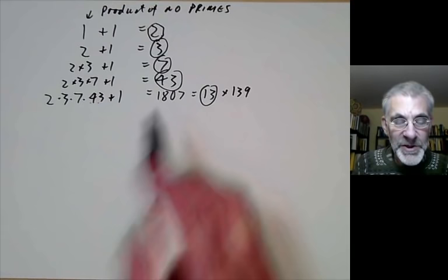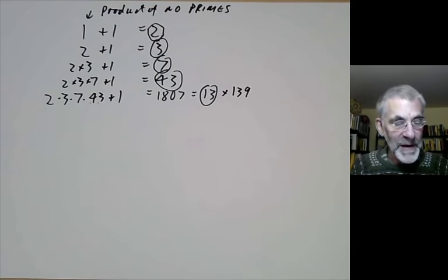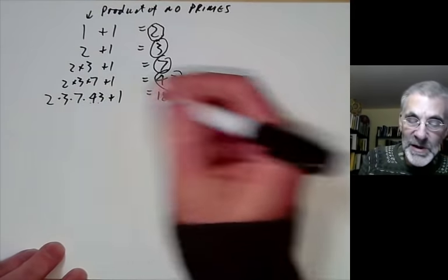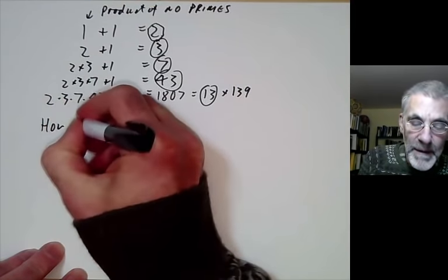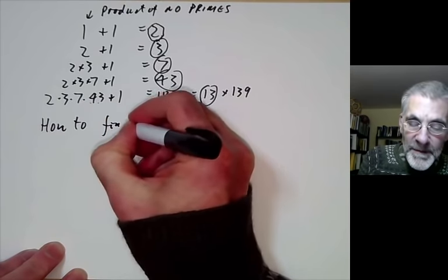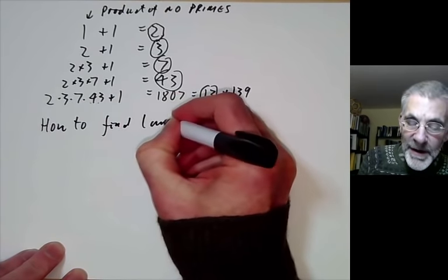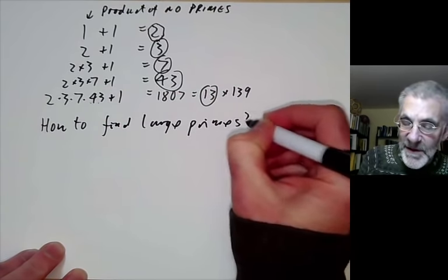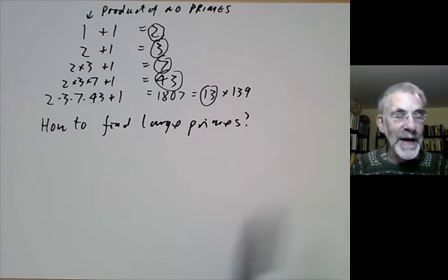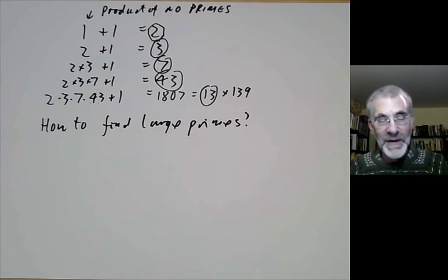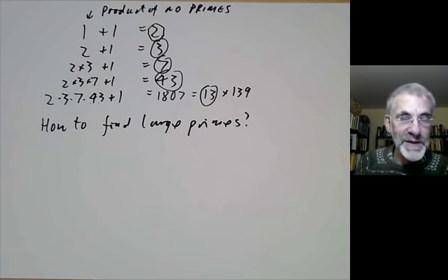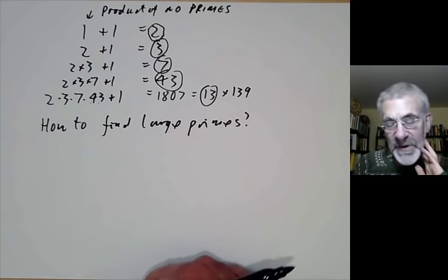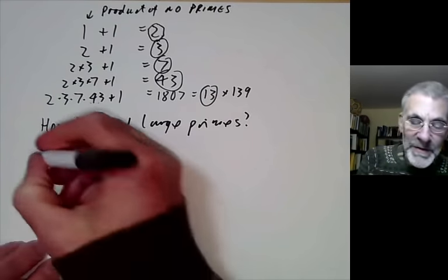So this shows there are infinitely many primes. The next question is how to find large primes. There's a sort of game played by number theorists where they compete to see who can find the biggest prime. So how can you do this?